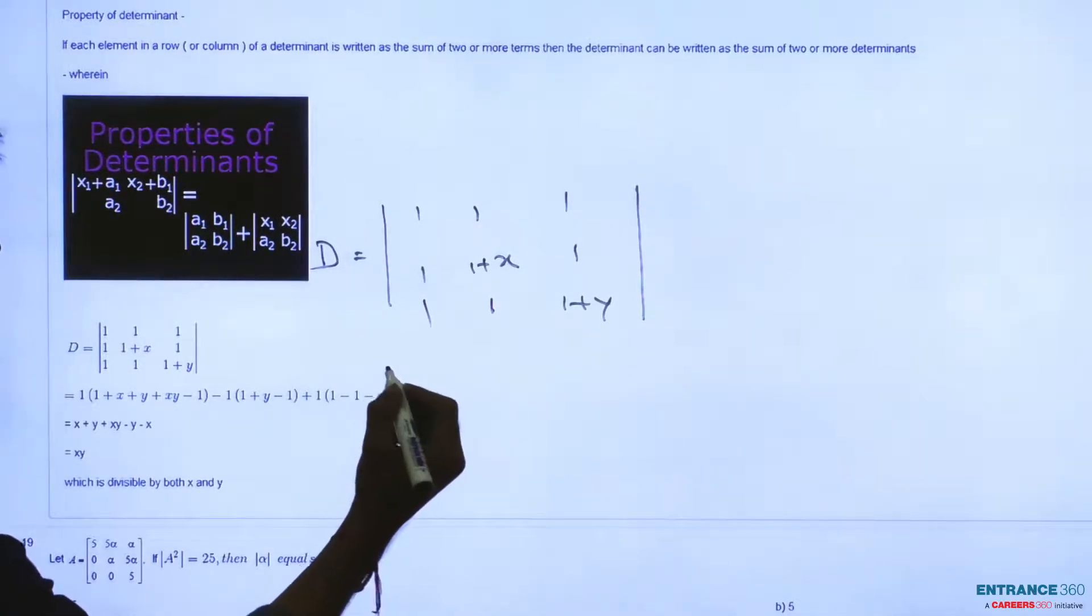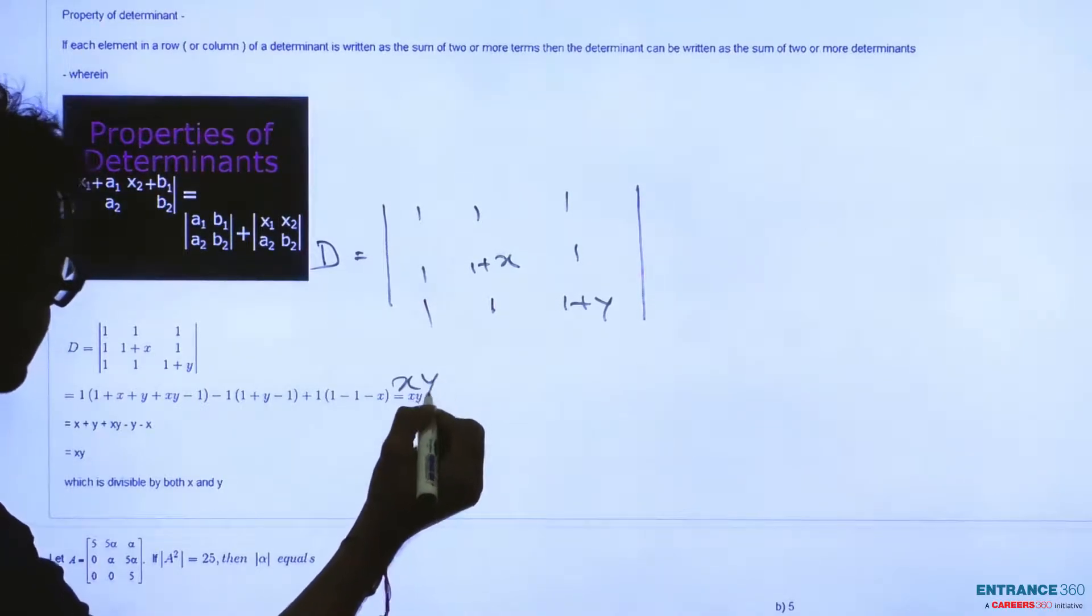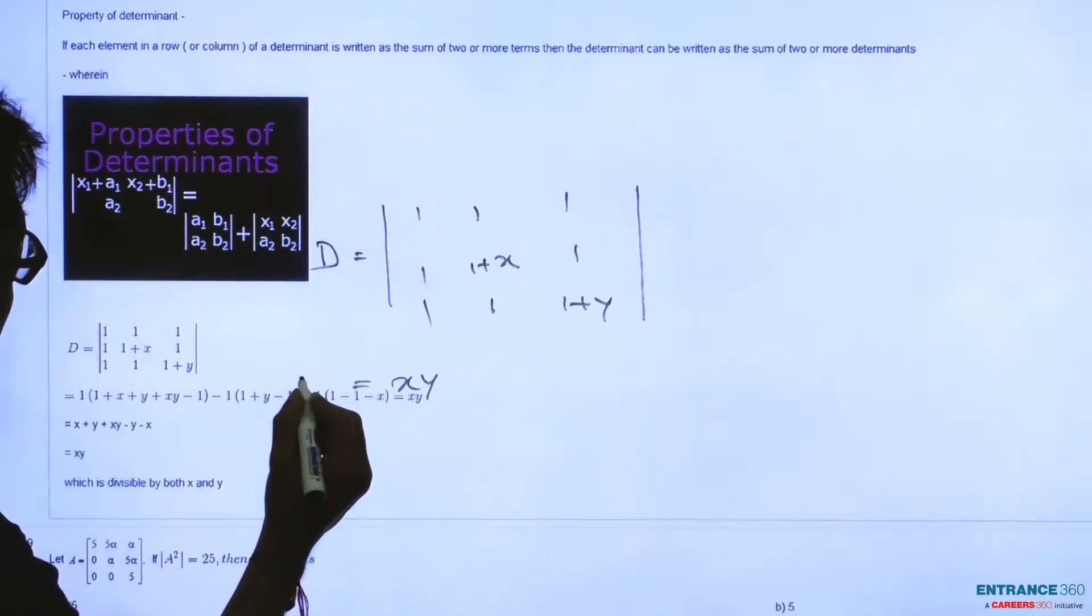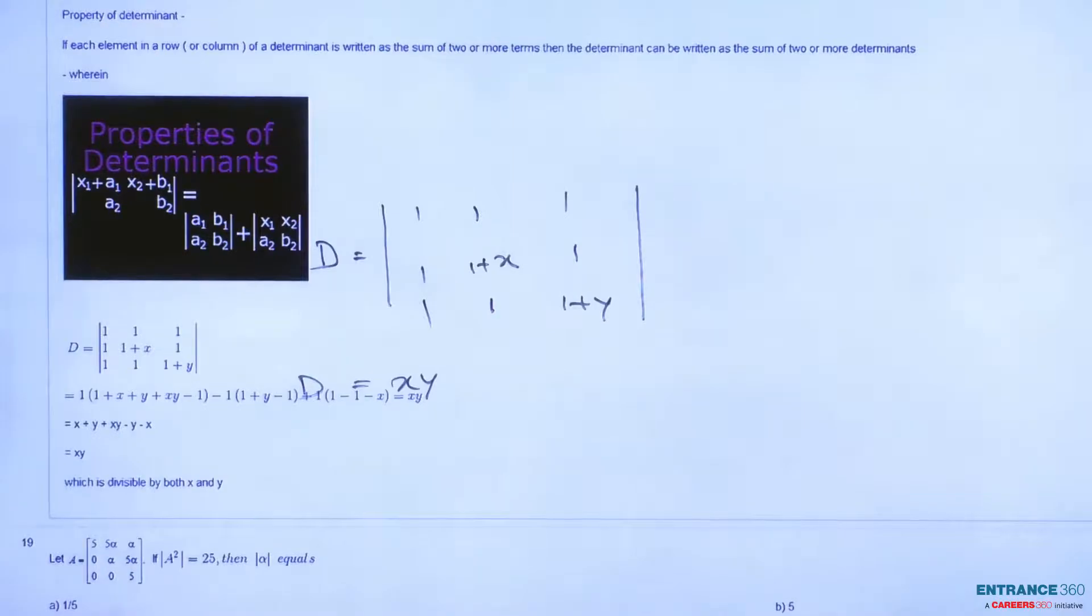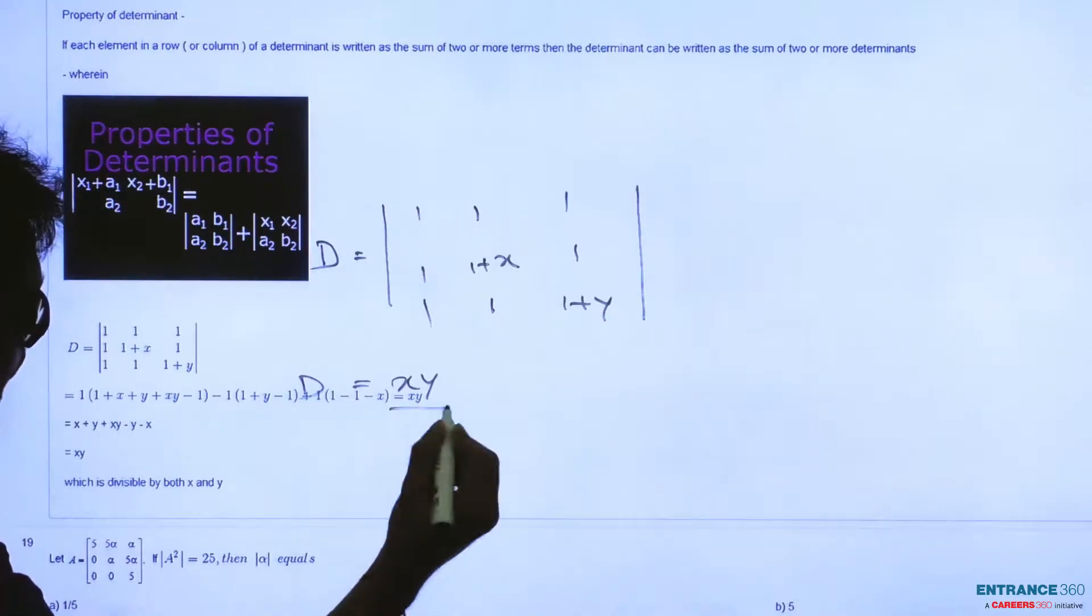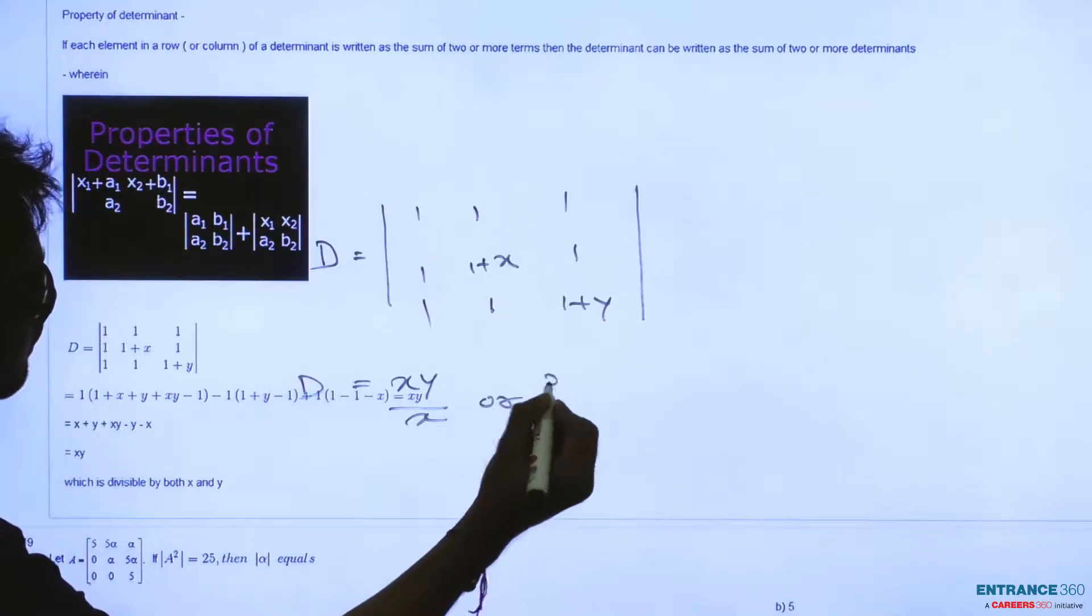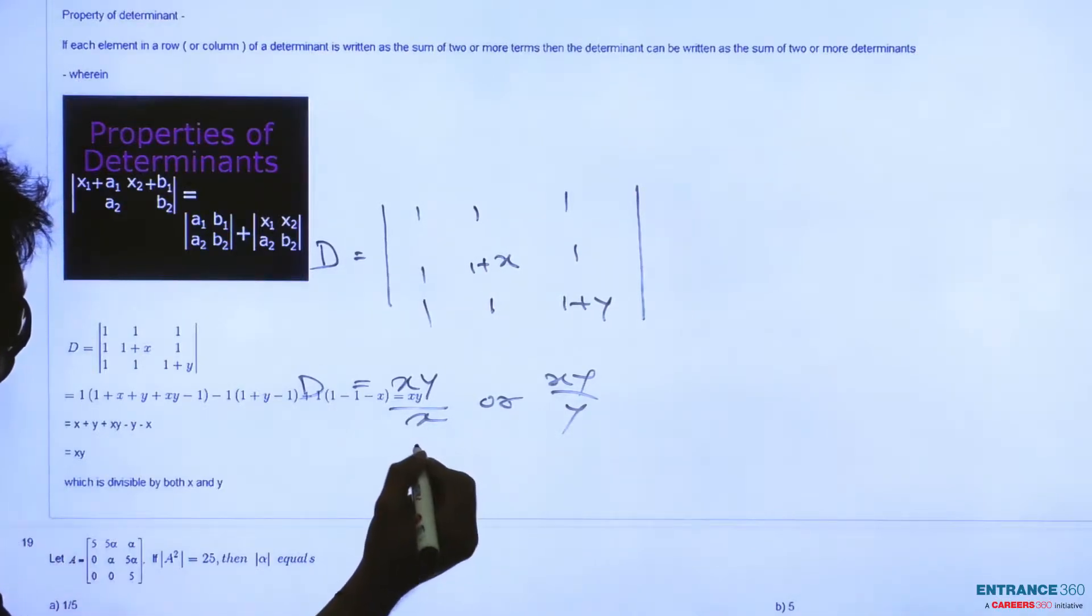After calculating, you get XY as the determinant of D, so D equals XY. Since XY is divisible by both X and Y - if we divide by X we get Y, or if we divide by Y we get X - D is divisible by both X and Y.